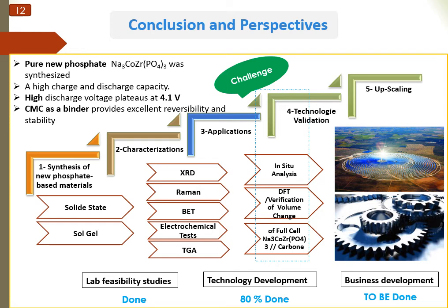To conclude, I will return to my first slide to present what we have achieved and what we plan to do in the future. Firstly, we succeeded in finalizing the lab feasibility studies with the synthesis of pure phosphate materials showing high discharge capacity and high voltage, and we also confirmed that CMC provides excellent reversibility and stability. Secondly, we have achieved 80% of the technology development. To complete it, we will characterize the cathode materials with XCT analysis, DFT determination of the volume change, and we will validate the technology with the preparation of full cells to be able to move to up-scaling.